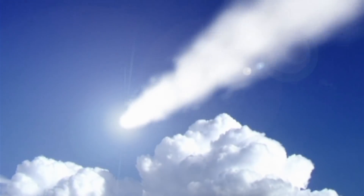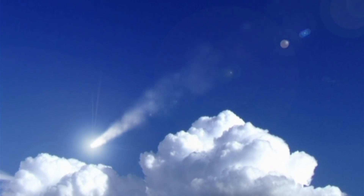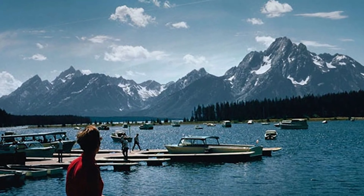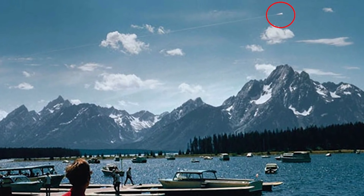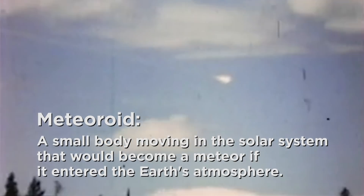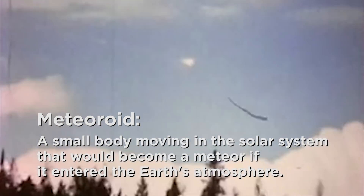There are also a class of objects called meteoroids. A good example is one that flew over the Tetons and was actually filmed in 1972. It was an object that came through the atmosphere, made a trail, people saw it, and then flew right out — it skipped off the atmosphere. We call that a meteoroid. It's not a meteorite, it's not a meteor, so it must be a meteoroid.